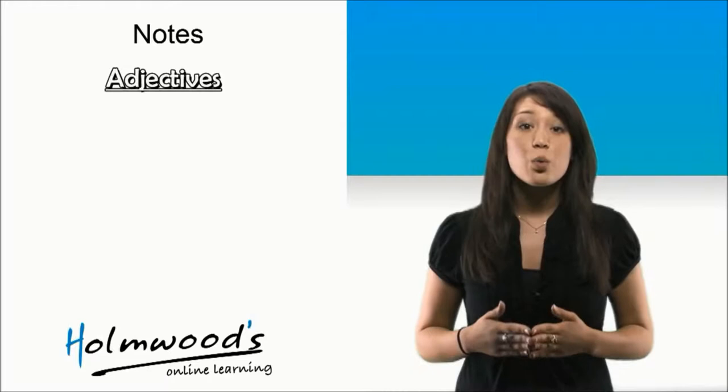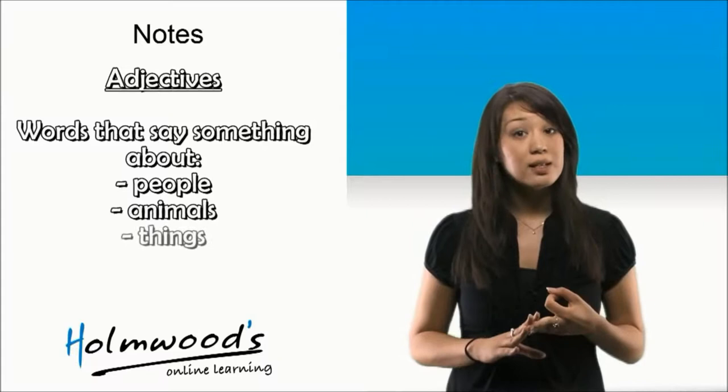The word beautiful is an example of an adjective. Adjectives are words that say something about people, animals, things, places, etc.